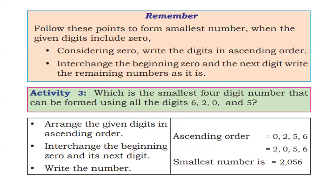Remember, follow these points to form the smallest number when the given digits include 0. Considering 0, write the digits in ascending order. Then interchange the beginning 0 with the next digit. Write the remaining numbers as they are.